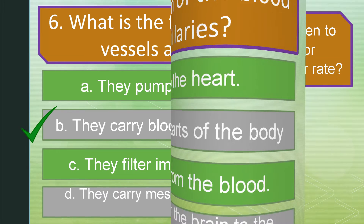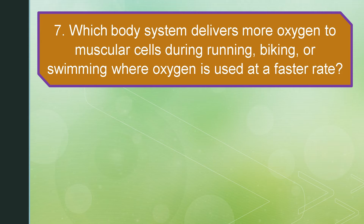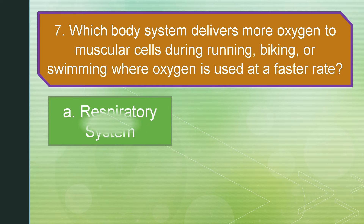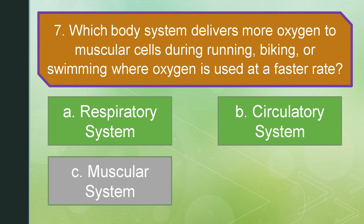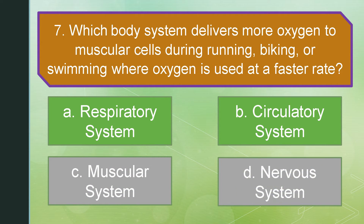Question number seven. Which body system delivers more oxygen to muscular cells during running, biking, or swimming where oxygen is used at a faster rate? Letter A: Respiratory system. Letter B: Circulatory system. Letter C: Muscular system. Or letter D: Nervous system. Letter B, Circulatory system, is the correct answer.